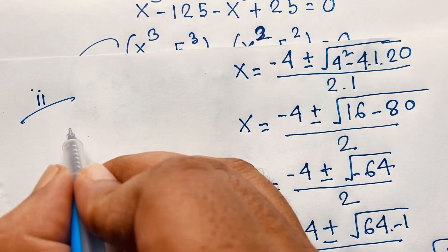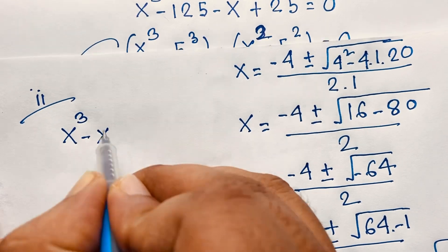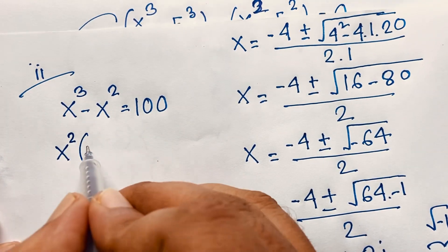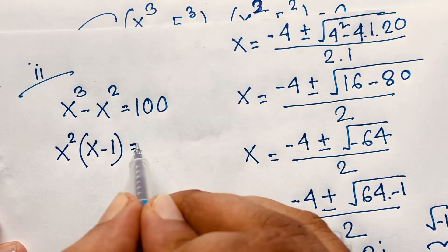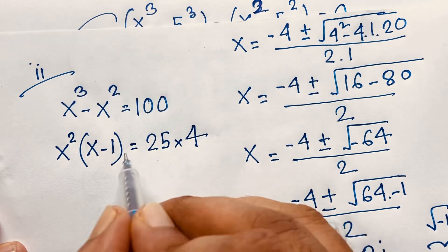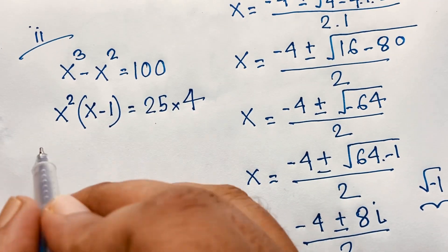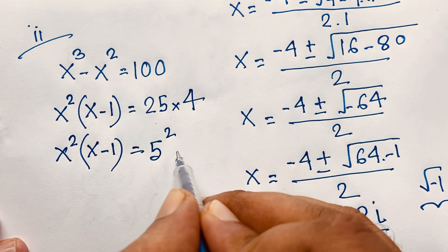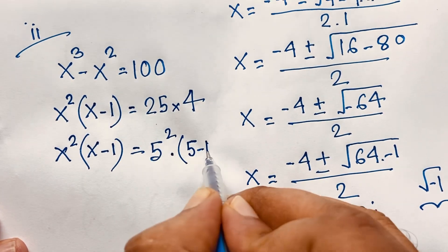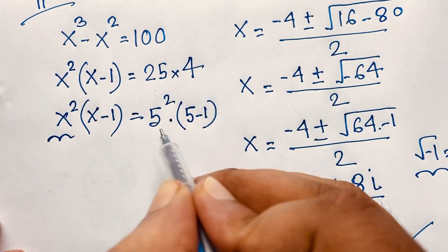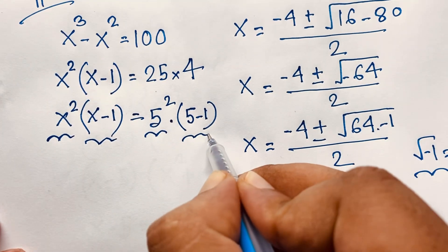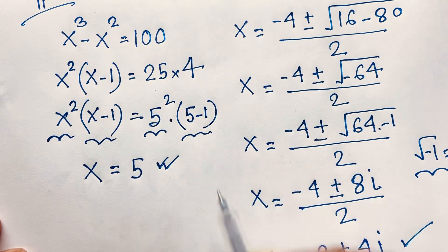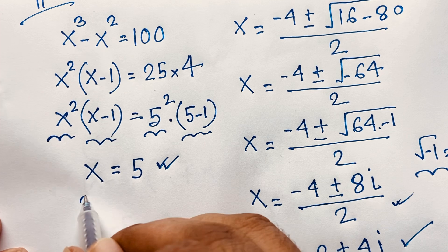For Method 2, we find only the real solution. Starting from x³ - x² = 100, factor out x²: x²(x - 1) = 100. Now 100 = 25 × 4 = 5² × (5 - 1). Comparing: x² = 5² and x - 1 = 5 - 1, so x = 5.